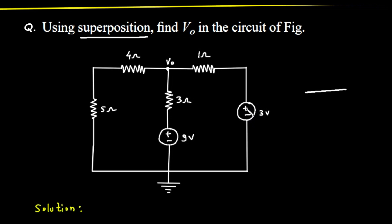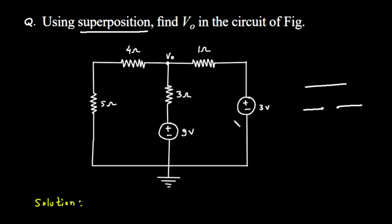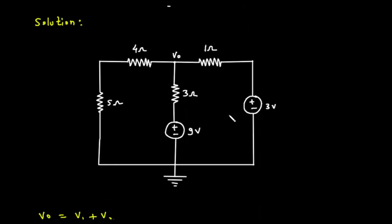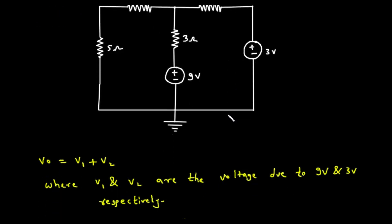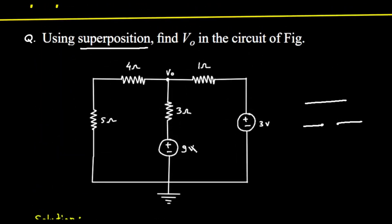If we had a current source, which we don't in this problem, we would turn it off by replacing it with an open circuit, which is simply a break in the wire. So, our strategy will be: First, we'll find the voltage at our target node caused only by the 9-volt source, while the 3-volt source is turned off. We'll call this voltage V1. Second, we'll find the voltage at that same node caused only by the 3-volt source, while the 9-volt source is turned off. We'll call this voltage V2. Finally, our total voltage, V0, will simply be V1 plus V2. So, V0 equals V1 plus V2.